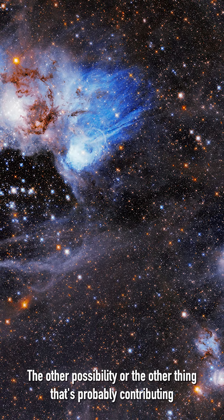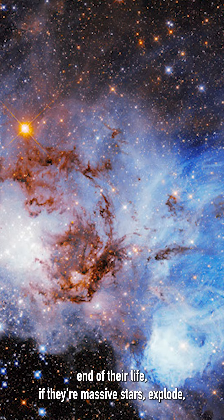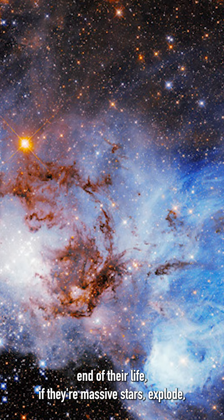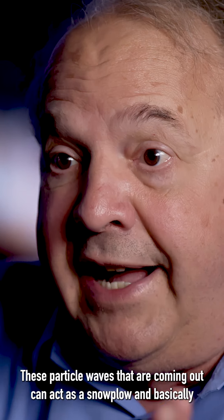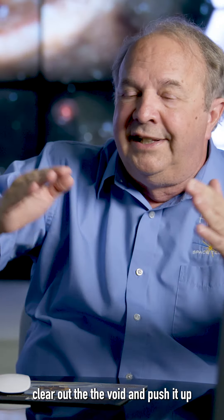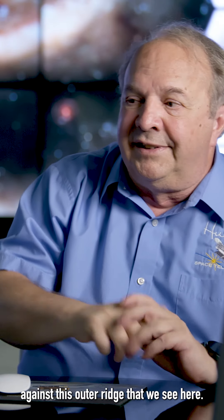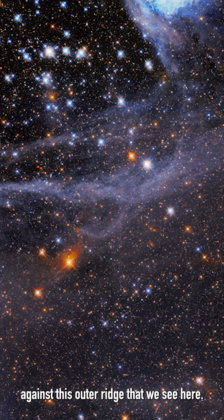The other possibility or the other thing that's probably contributing to the clearing of this super bubble is supernova. Supernova, at the end of their life, massive stars explode, which sends out both particles and radiation. These particle waves that are coming out can act as a snow plow and basically clear out the void and push it up against this outer ridge that we see here.